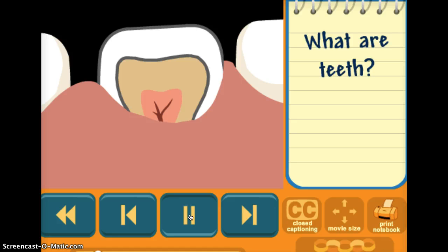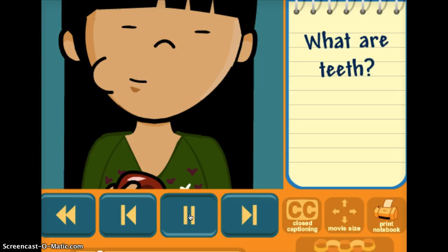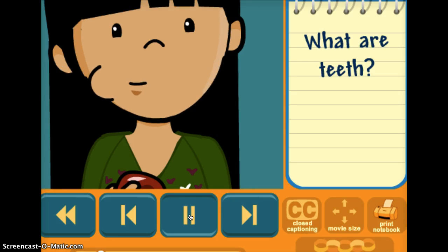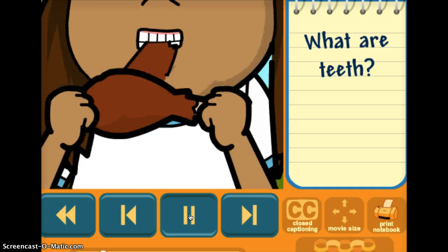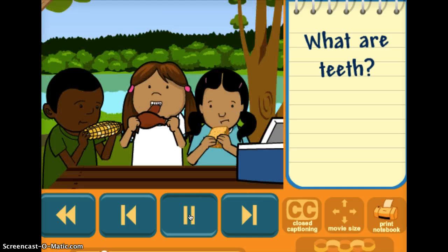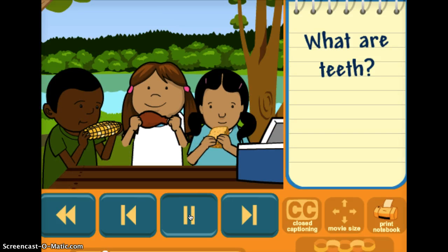The crowns are covered in enamel. Enamel is the hardest material in the whole body. Teeth help you cut, grasp, tear, and chew your food into small pieces that you can swallow.